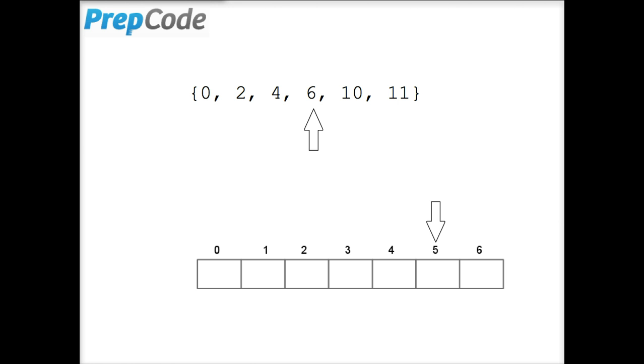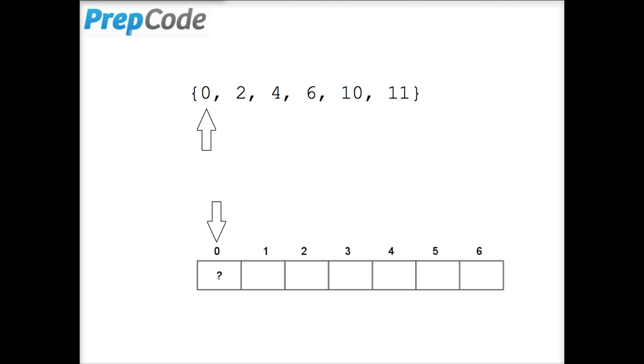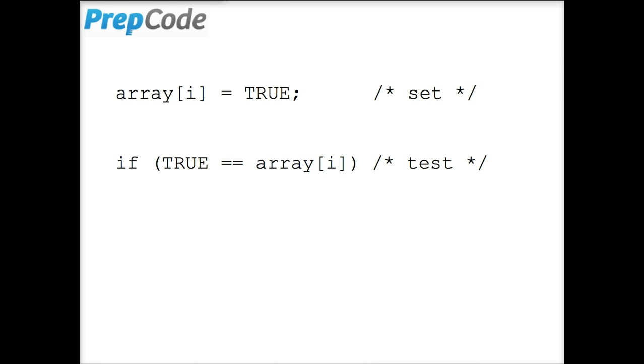We don't really need a hash function because the integers themselves describe where they go in a hash table. What exactly do we store at an index associated with an integer i? An obvious thing to store is a true boolean value. Now we assign to the index i the value true if the integer i is in the set.